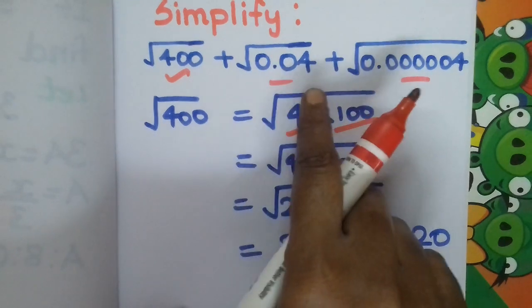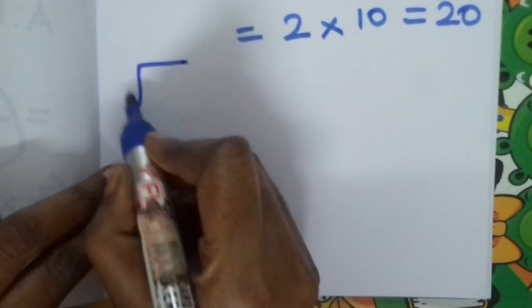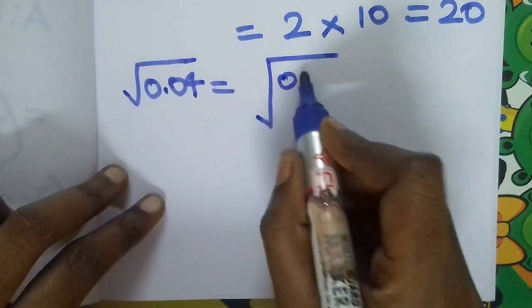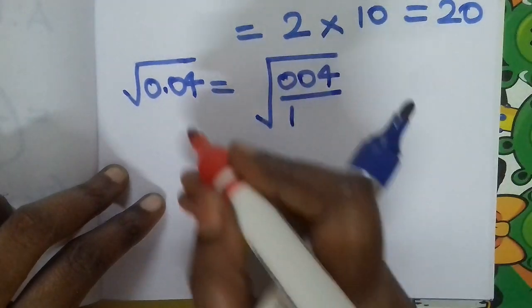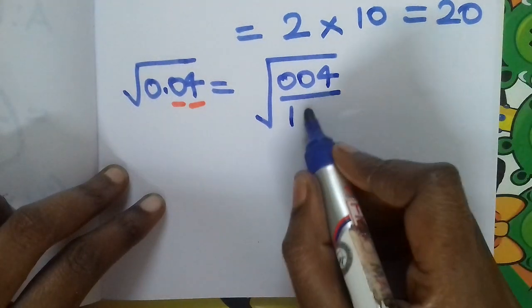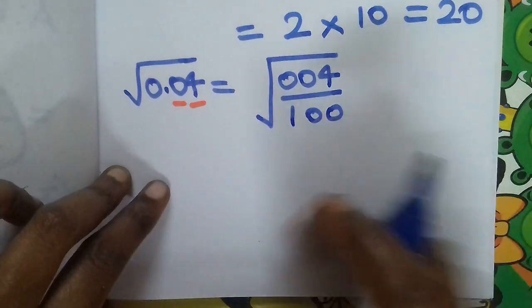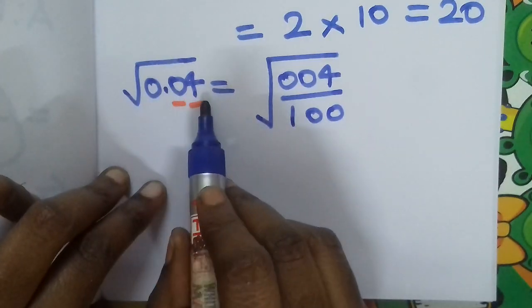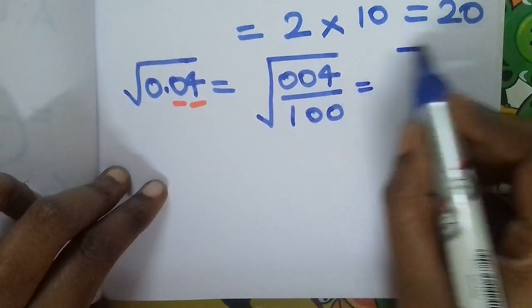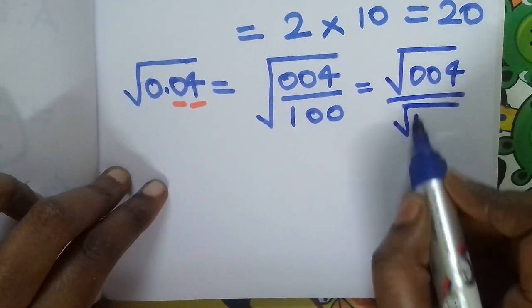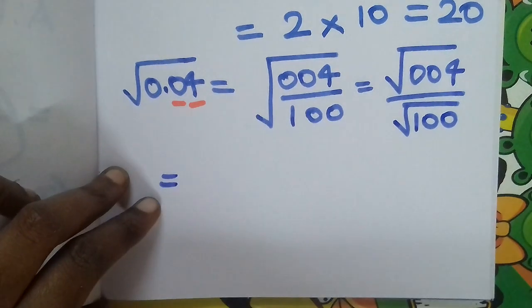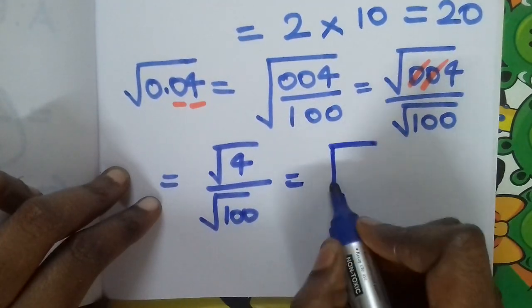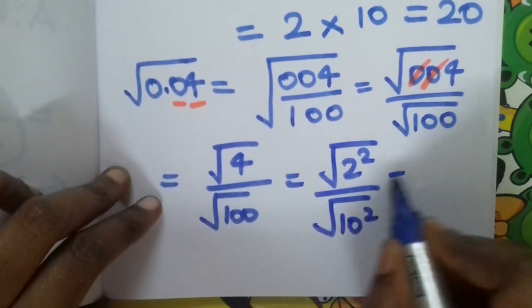Next, solve root of 0.04. Removing the decimal point, we can express this as root 4 divided by root of 100. Root 4 is 2 squared and root 100 is 10 squared, which equals 2 by 10.